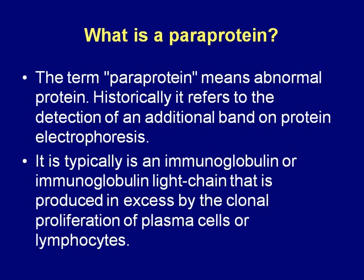What exactly is a paraprotein? In the simplest of terms, a paraprotein is an abnormal protein that's not supposed to be there — not supposed to be detected on a lab test. The term comes from the detection of an abnormal band on protein electrophoresis. If you run an electrophoretic gel of serum proteins and you see something that is not normal, that is a paraprotein. It's just an abnormal protein detected on protein electrophoresis.